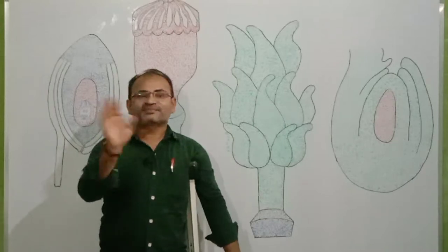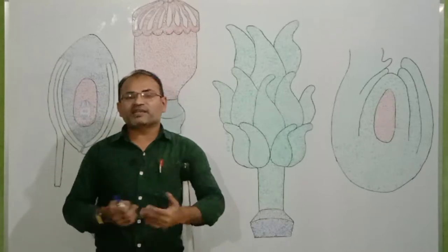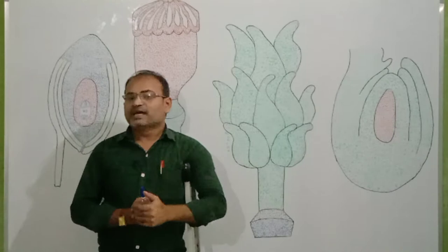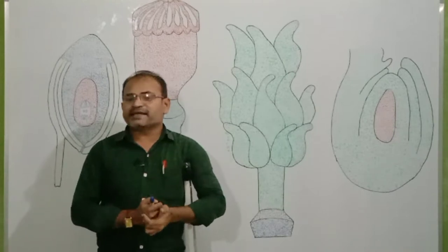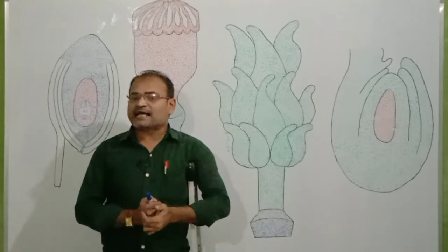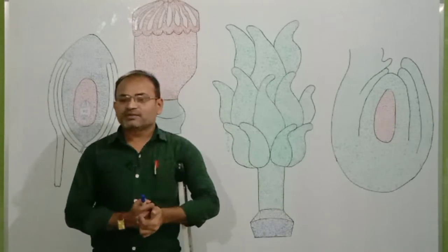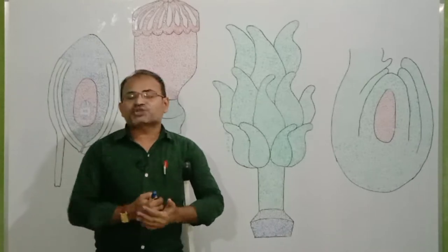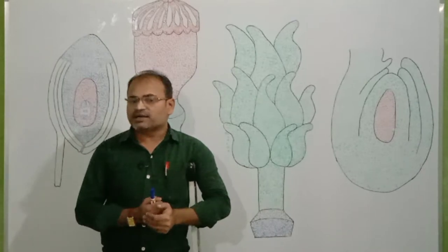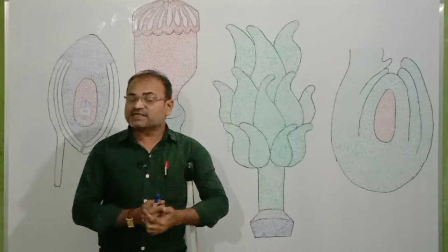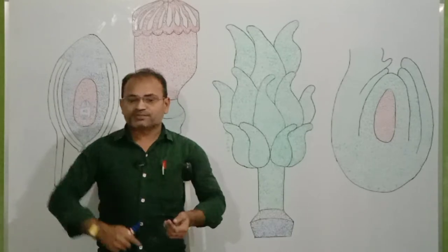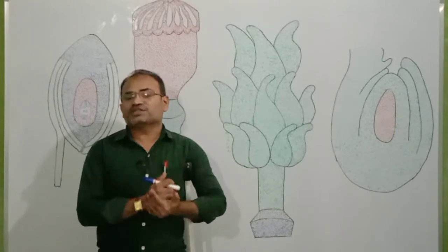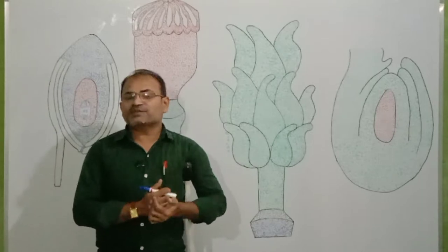Hello students and warmly welcome to all of you in biology smart classes. In this section we will again learn the sexual reproduction in flowering plants. Today we will discuss the main part of the sexual reproduction in flowering plants — the female reproductive part called the gynoecium. Today we will study the gynoecium.